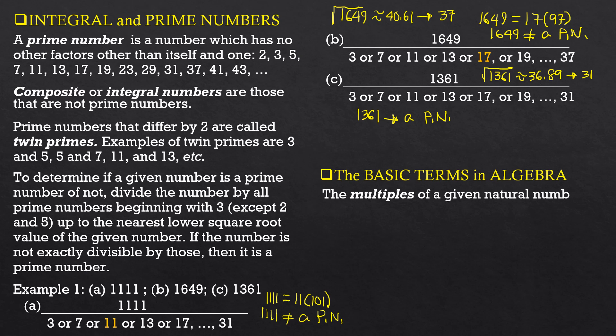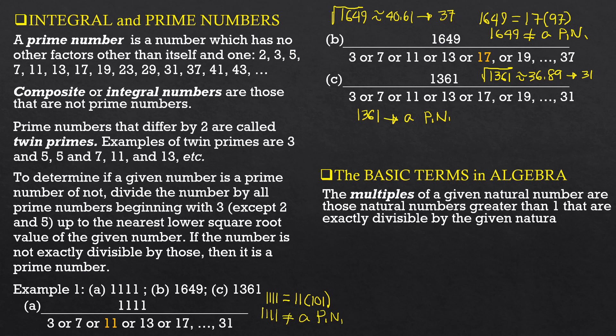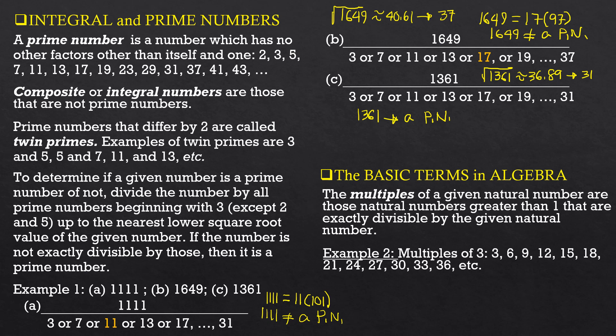The multiples of a given natural number are those natural numbers greater than 1 that are exactly divisible by the given natural number. For example, the multiples of 3 are: 3, 6, 9, 12, 15, 18, 21, 24, 27, 30, 33, 36, 39, 42, 45, 48, 51, 54, 57, 60, 63, and so on and so forth.